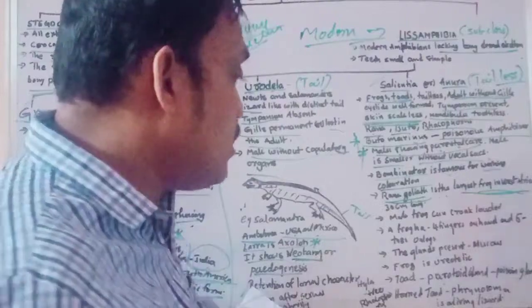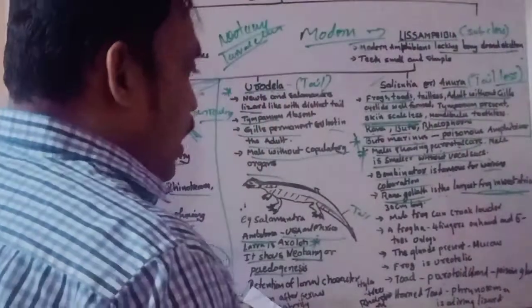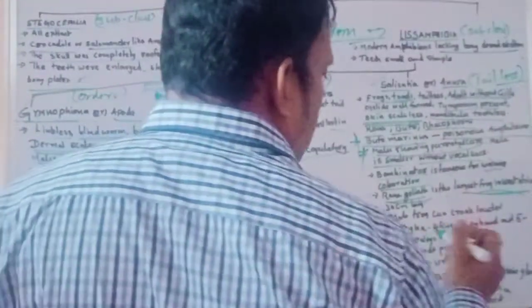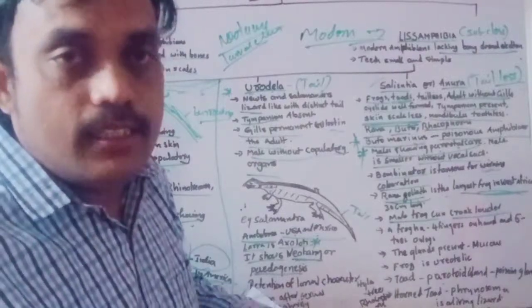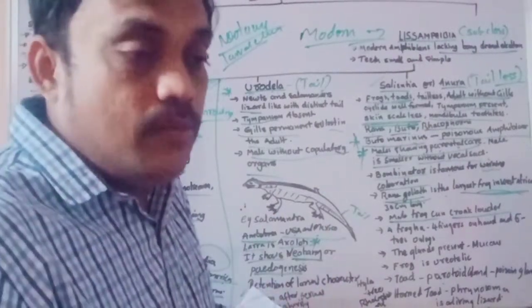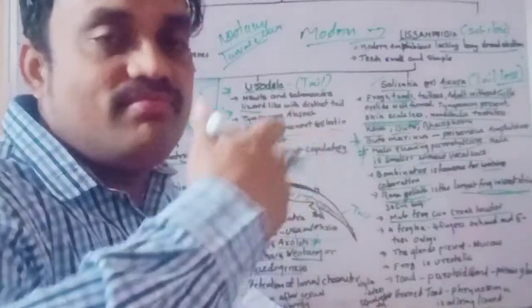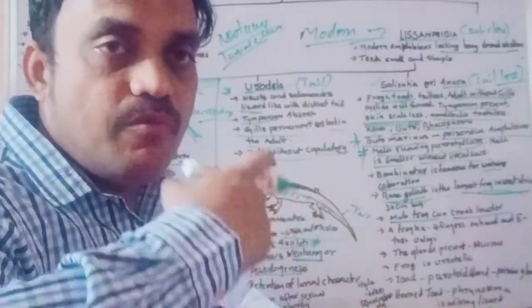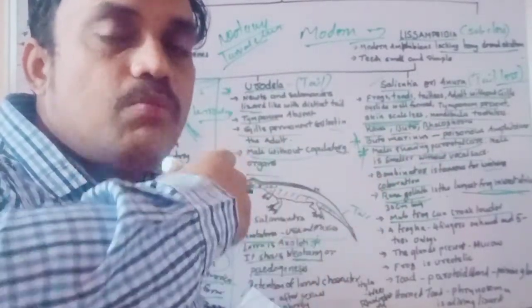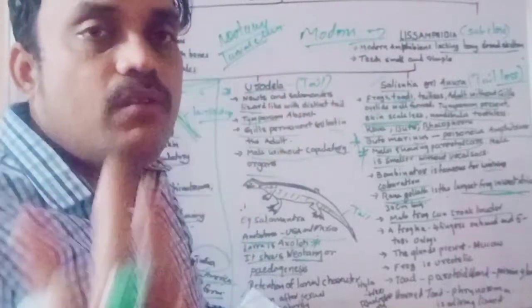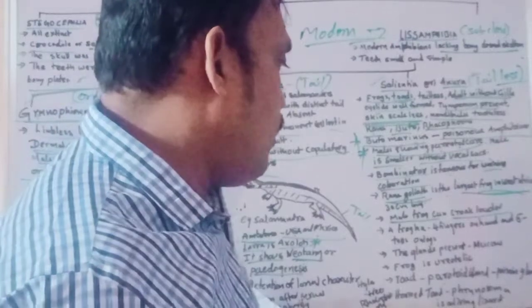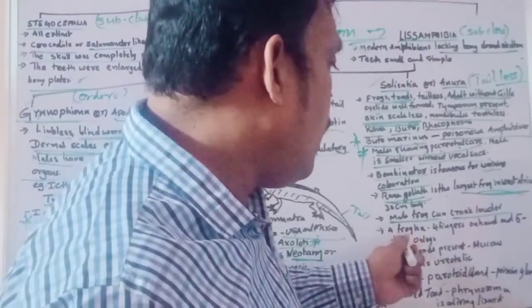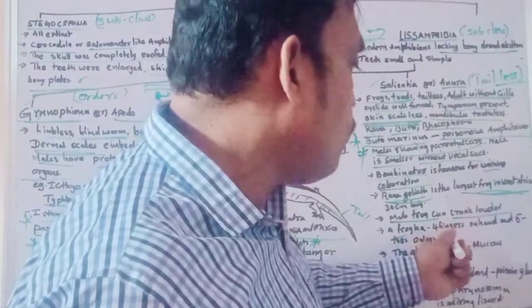More Urodela examples: Amphiuma — Congo eel; Cryptobranchus — Hellbender; Necturus — Mud Puppy; Proteus — Cave Salamander; Siren — Mud Eel; Triton — Newt; Salamandra — Salamander, which looks like a lizard-like structure.